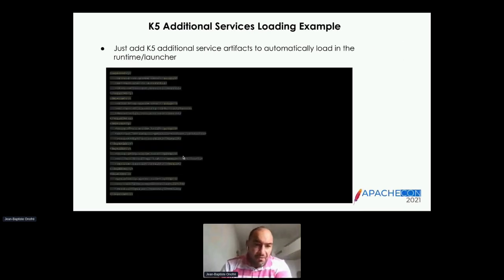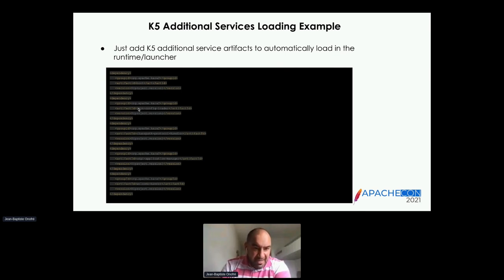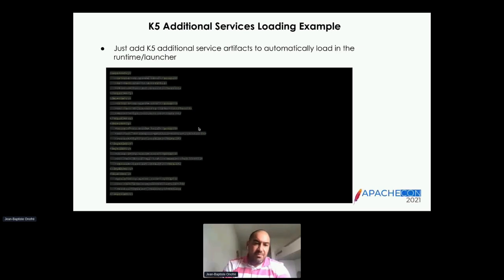Here is a concrete example of a Karaf 4-like application distribution using Karaf 5. The org.apache.karaf5.boot artifact is the Karaf 5 core. Then you can see additional service artifacts: the JSON config loader, the classpath protocol handler, the OSGi application manager, and the welcome banner. You just define the dependencies and Karaf 5 automatically loads these additional services and starts them.